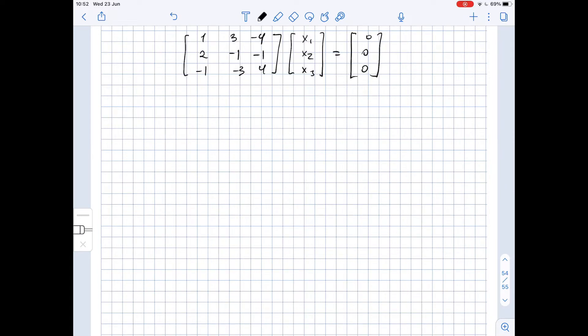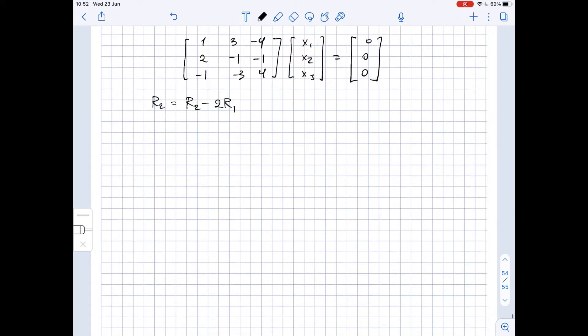The first operation which we will do is substituting row two by row two minus two times row one. So here we will get one, three, negative four. This stays the same, and this part also stays the same.